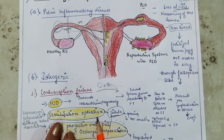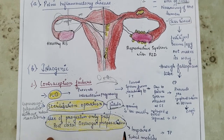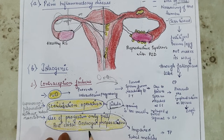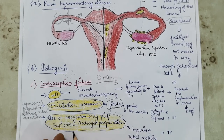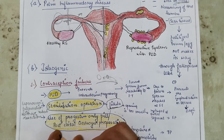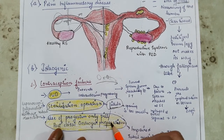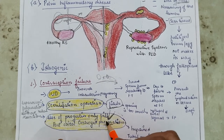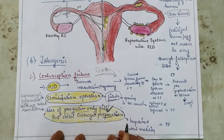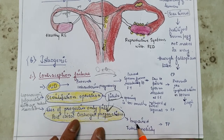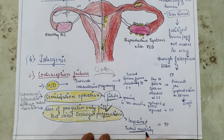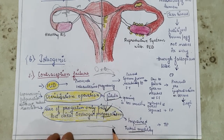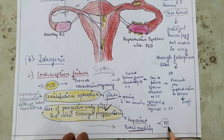Another iatrogenic cause: use of progestin-only pills or post-coital estrogen preparations. If fertilization occurs before these drugs are administered, they impair tubal motility, preventing migration to the uterine cavity and resulting in tubal pregnancy.